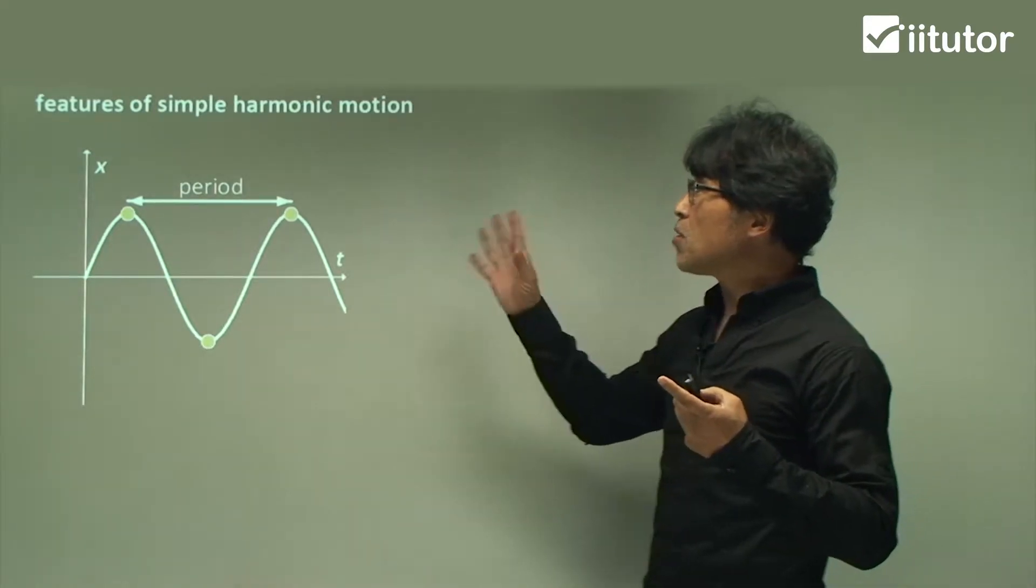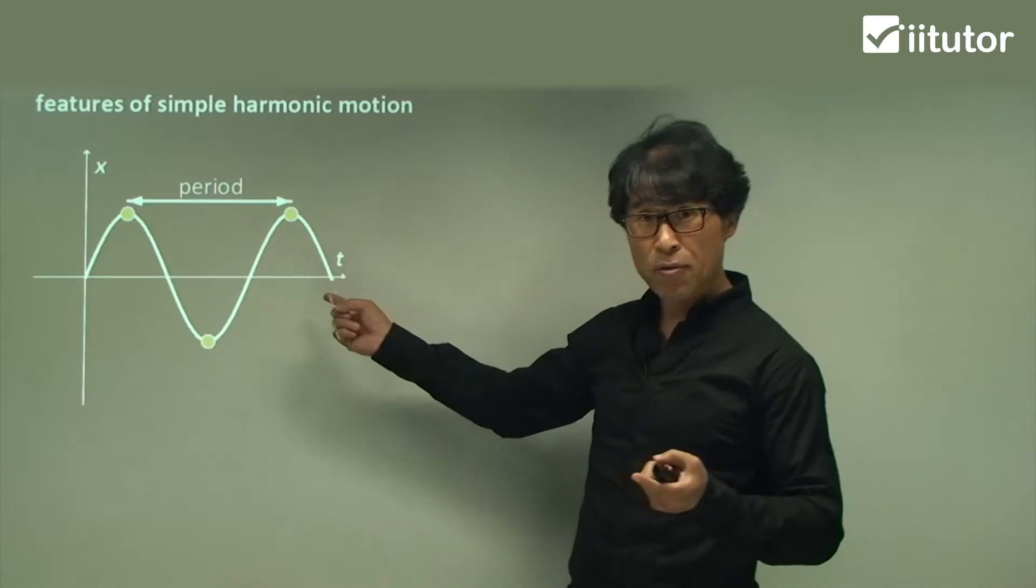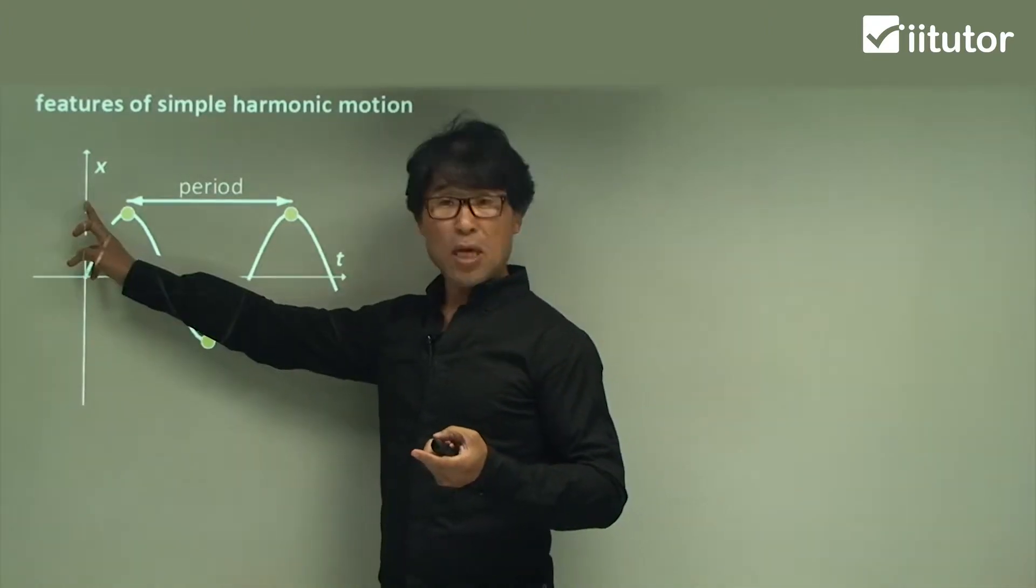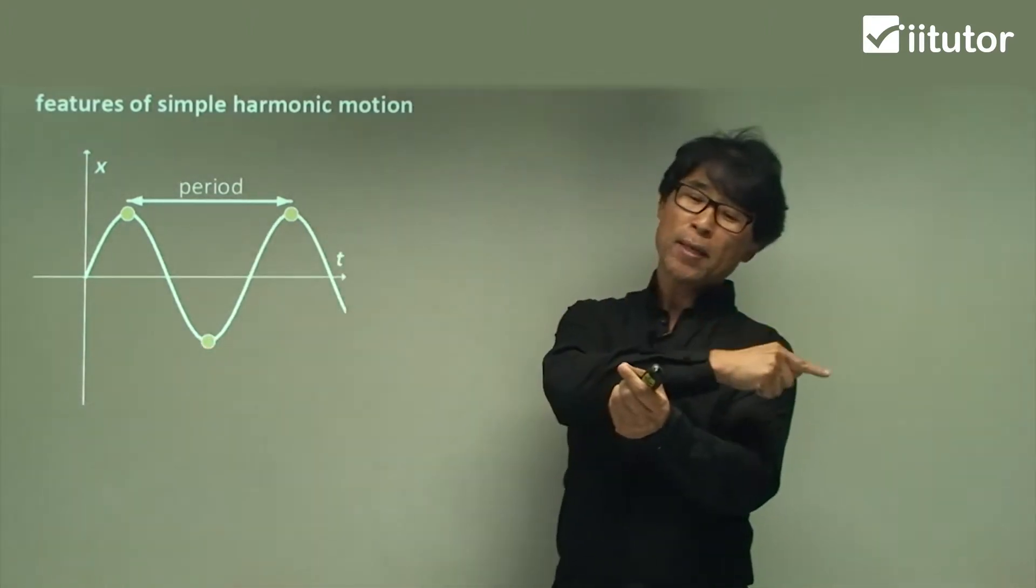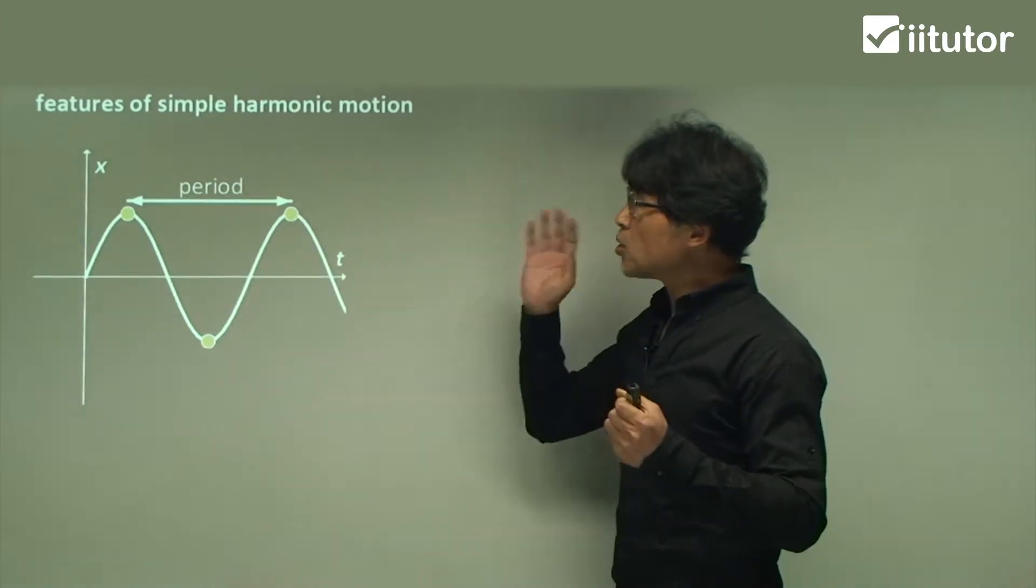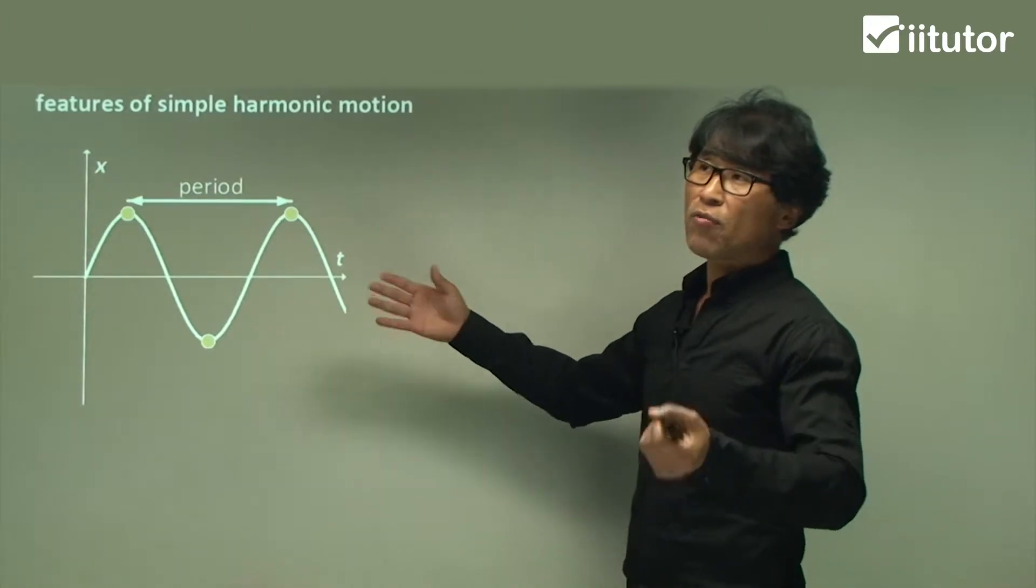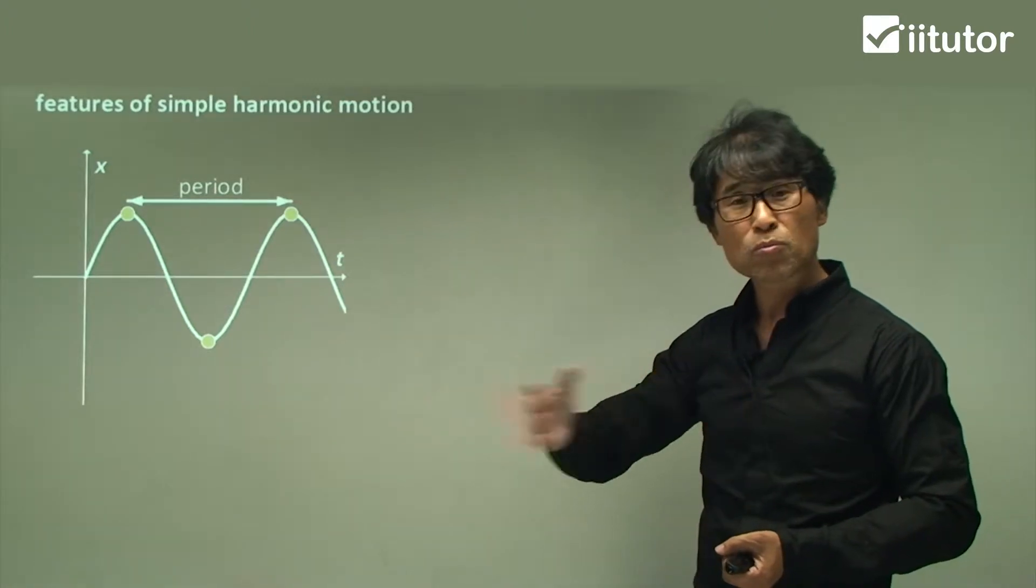The simple harmonic motion also moves in the horizontal direction, right-hand side or left-hand side. So it moves from here, goes in and comes back. Please do not stick to the fact that simple harmonic motion is only for vertical movement. It is also horizontal movement as well.